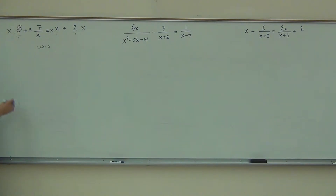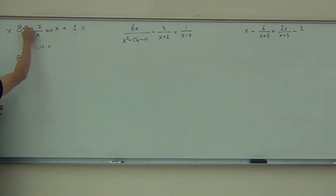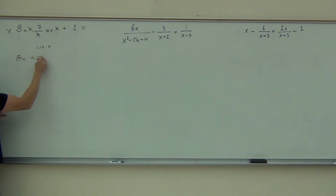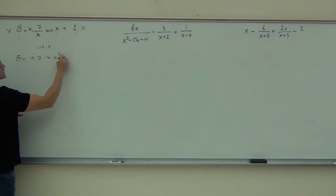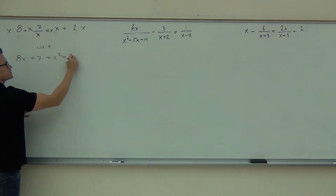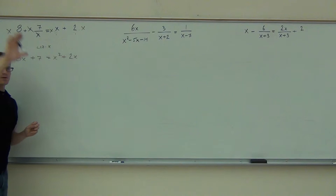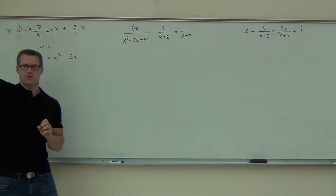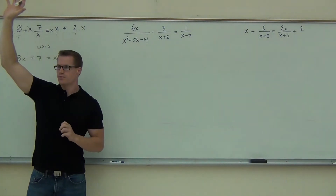We can show that — X over 1. We'll get 8X, and those cancel out. We'll get plus 7, we'll get X squared, and we'll get plus 2X. How many people made it that far? Very good.